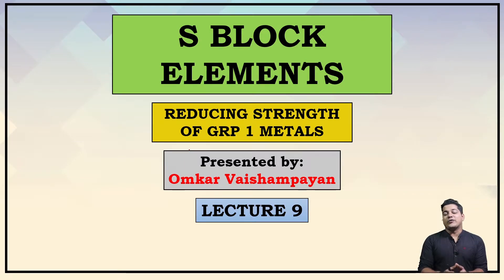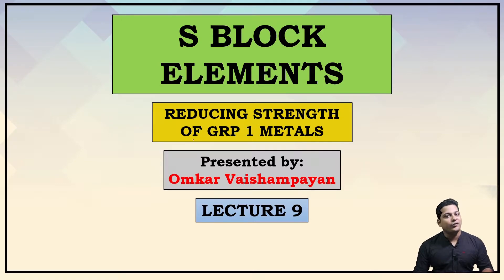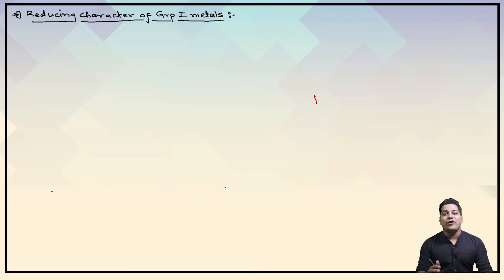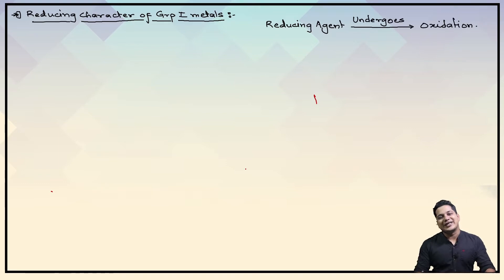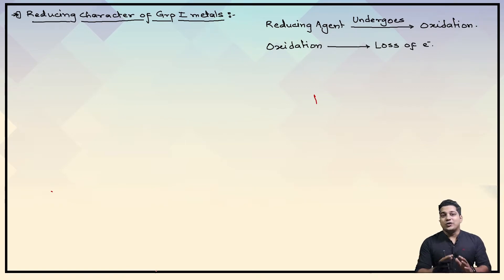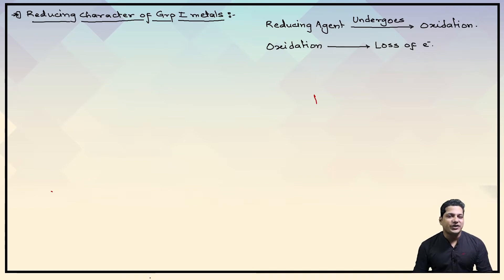Hello students, today we are going to start off with the next part of our chapter S block elements, and today we are going to discuss about the reducing strength of Group 1 metals. Let's start off with understanding what exactly is reducing strength or reducing agent strength, and which is the strongest and which is the weakest reducing agent among Group 1.